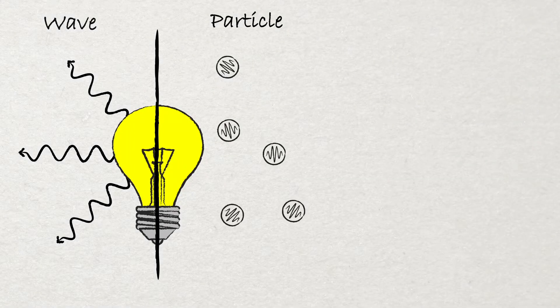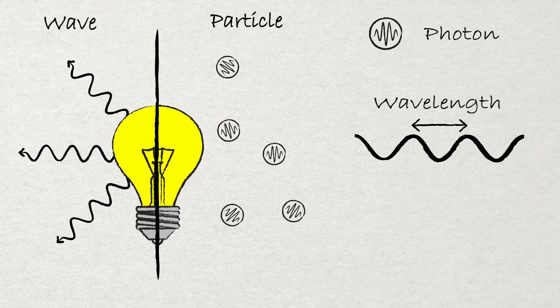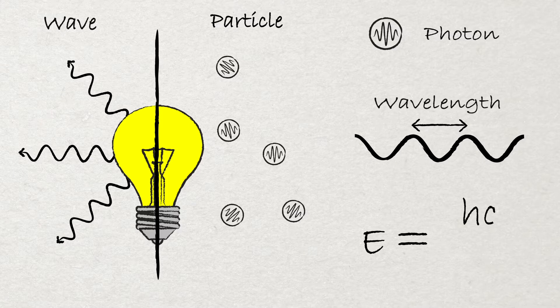Now when we see light, we effectively measure two quantities. The amount of light, or intensity, where a single quantity of light is called a photon. And the energy of that light, which is its color and is related to the wavelength of the light, such that the energy of a photon E equals Planck's constant H times the speed of light C, divided by wavelength lambda. And it is much easier to discuss light in terms of wavelength rather than energy.